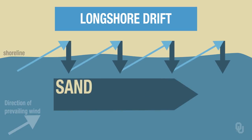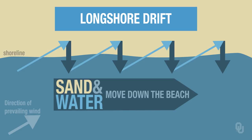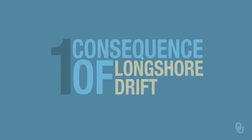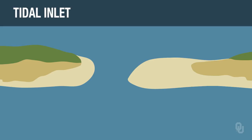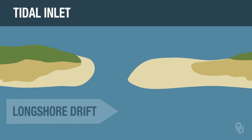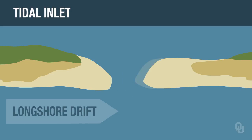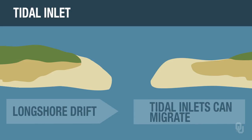So the water and the sediment being moved by the water follows a zigzag pattern, and sand and water move down the beach — that's called longshore drift. It's a very important process. One consequence of longshore drift is if you have a tidal inlet and the longshore drift is in one direction, it's going to add sand to one side of the tidal inlet. But the tidal inlet wants to maintain its opening because the tides have to go in and out, so you get erosion on the other side. As a result, tidal inlets can migrate.